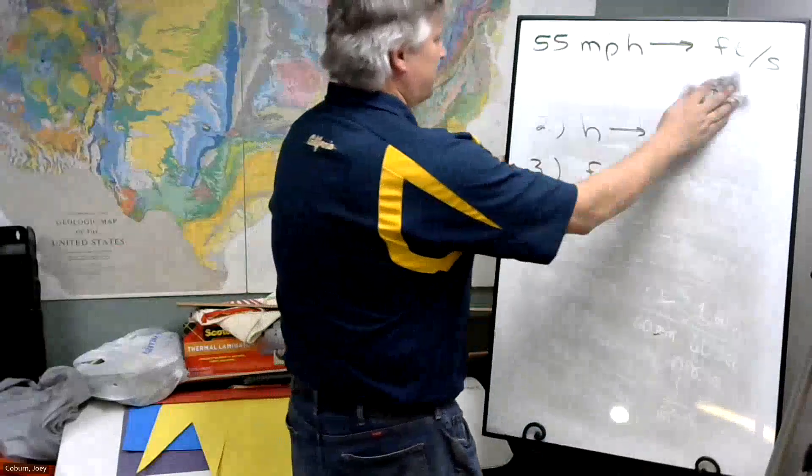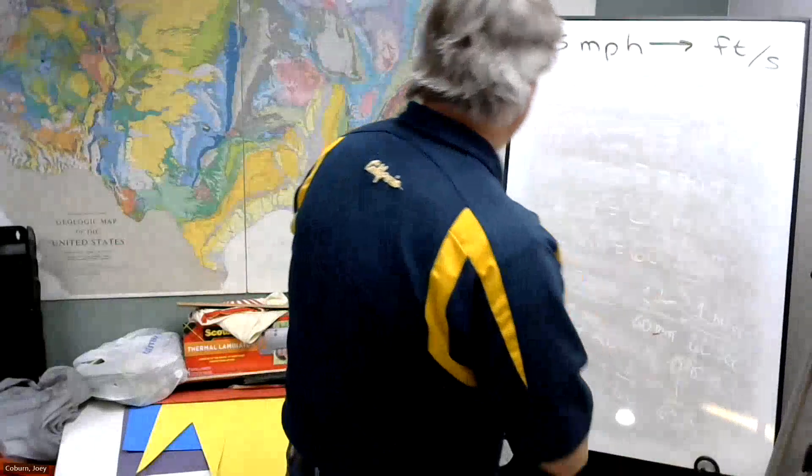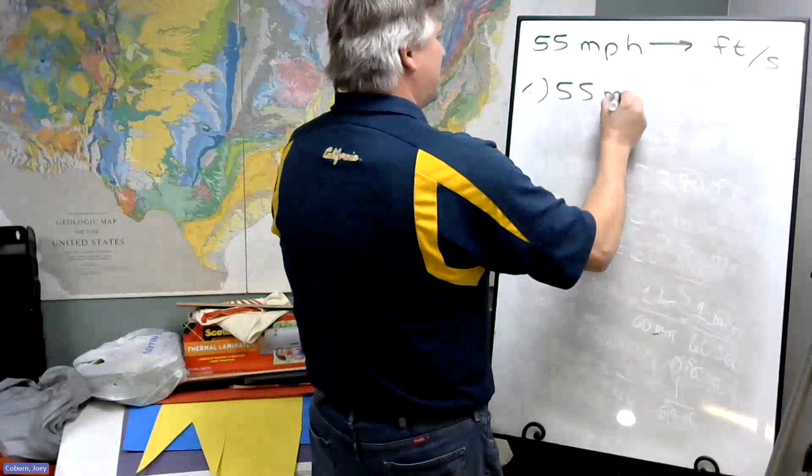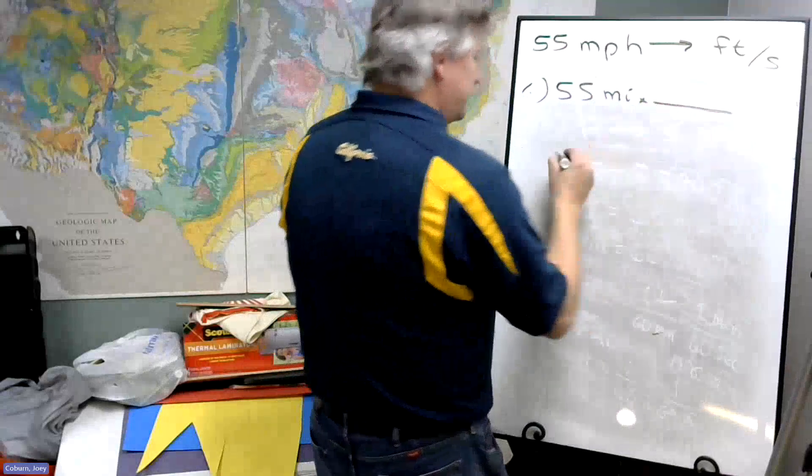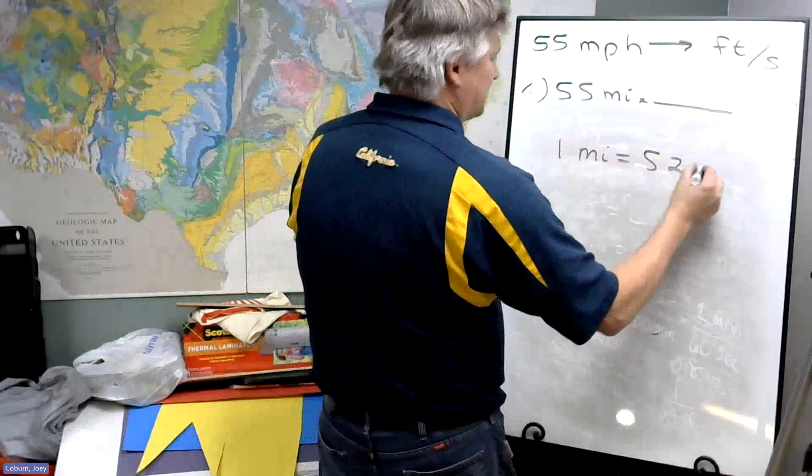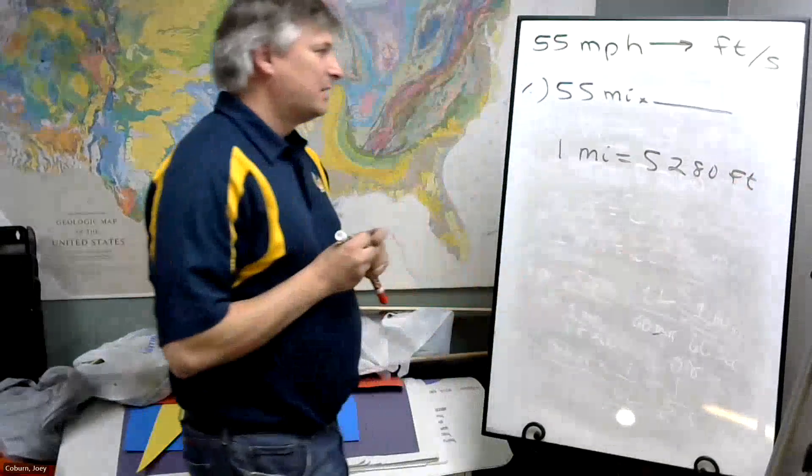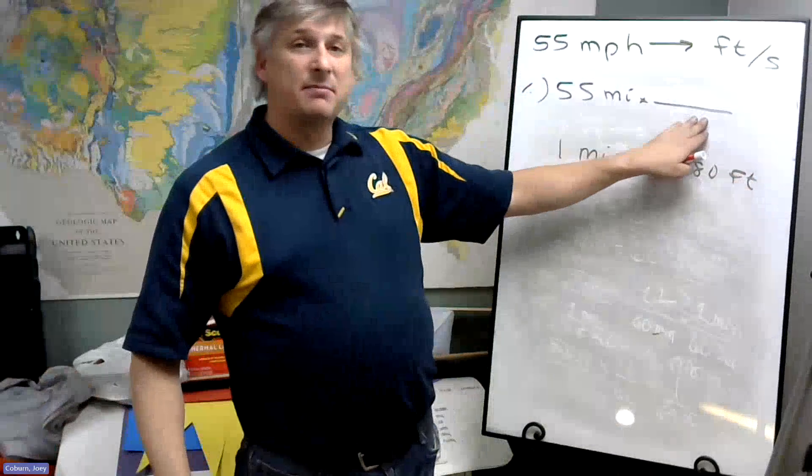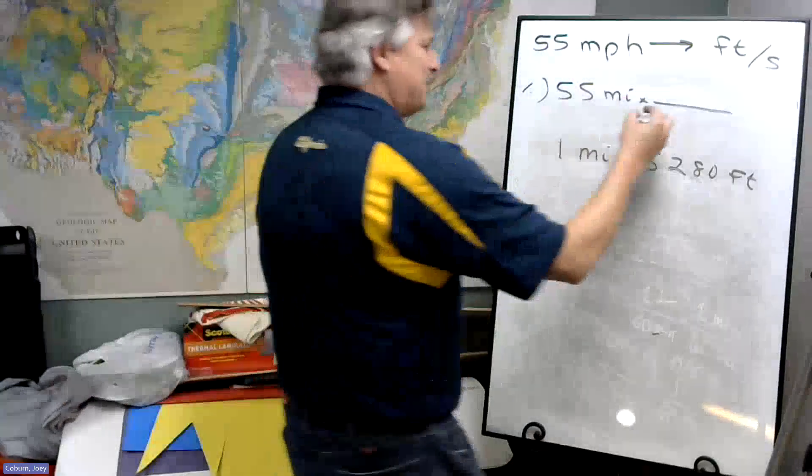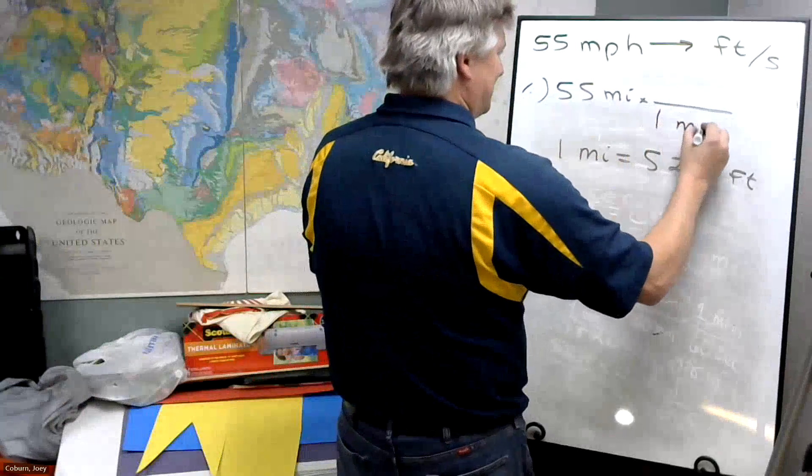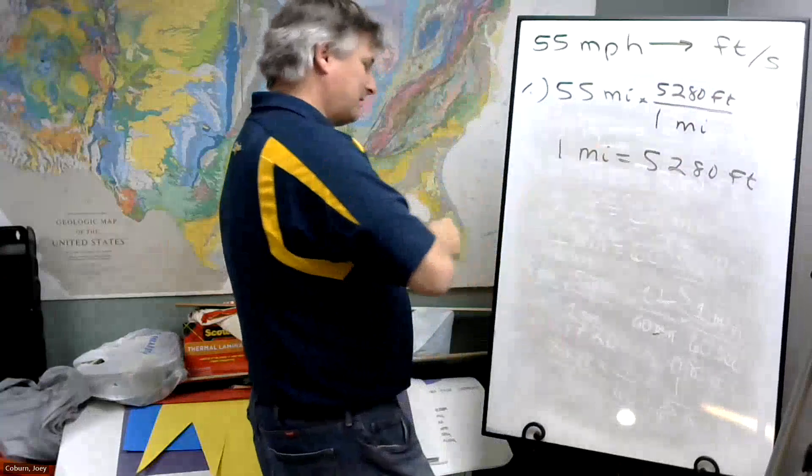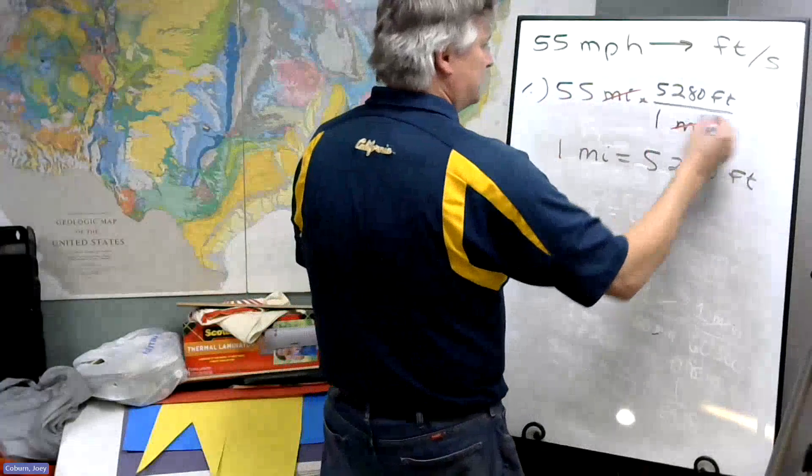First step: 55 miles. And again, we're going to use this relationship that one mile is 5,280 feet. We want miles to cancel, so we need the miles to be in the bottom and the feet to be on top, so feet remain. So we better set it up like this.